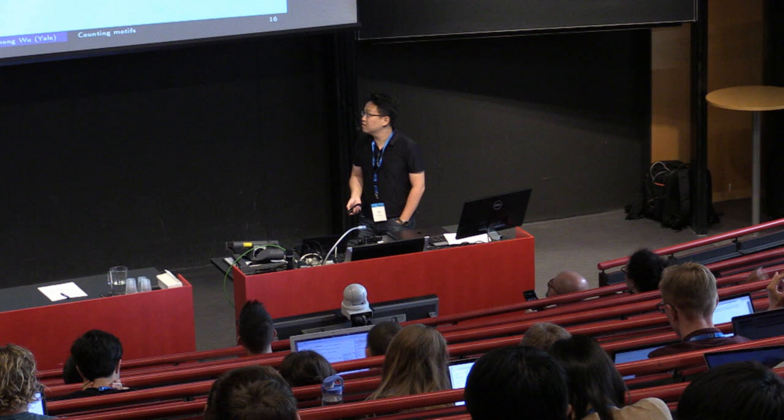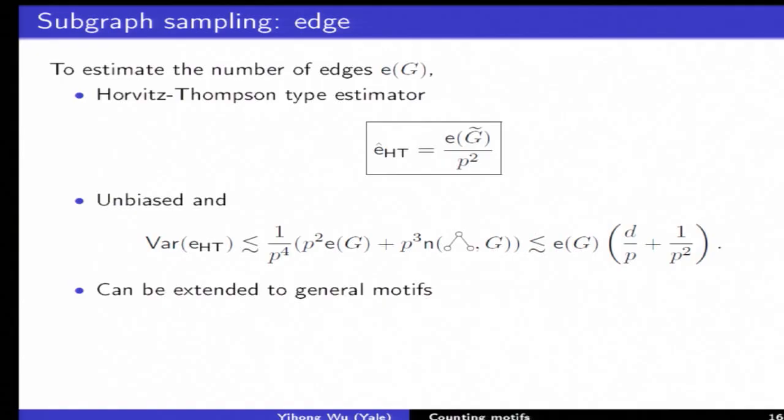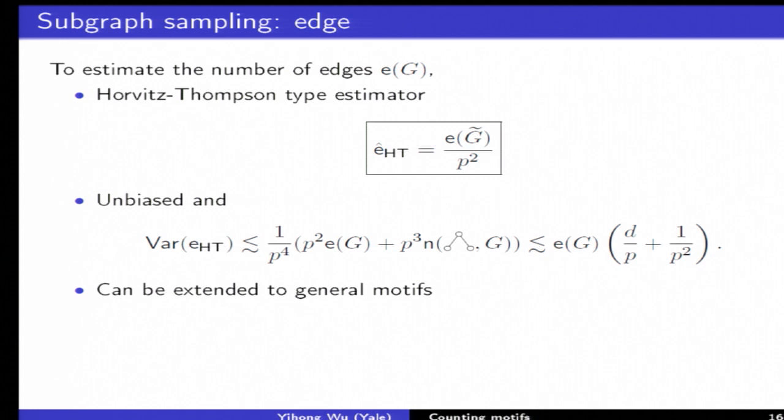Let me tell you very quickly the estimator, it's very simple actually. Let's say you want to count triangles. There's a heuristic in statistics called Horvitz-Thompson which means if you sample a bunch of things and you want to account for the fact that these observations happen with probability p then you just divide by that to make it unbiased. You take the observed number of edges and divide by p squared because if you want to see an edge in subgraph sampling model both endpoints need to be sampled. You do this, do the analysis and it turns out to be optimal.